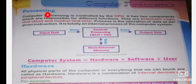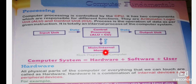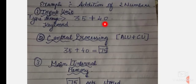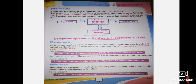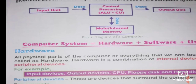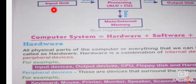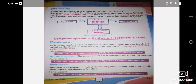This is the block diagram of your computer. First is the input unit, second is the central processing unit, third is main or internal memory, and finally the output unit. For example, if you want to add two numbers — 35 plus 40 — in the input unit you are going to type through the keyboard, first 35 and then 40.